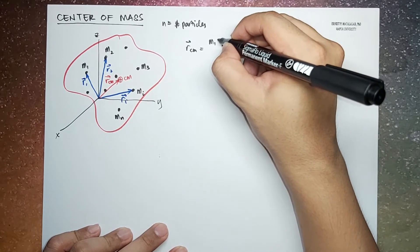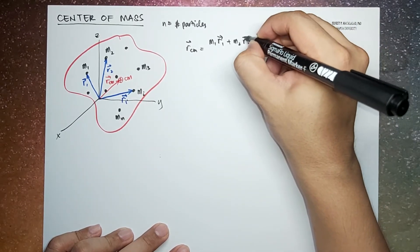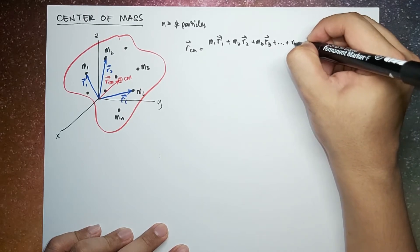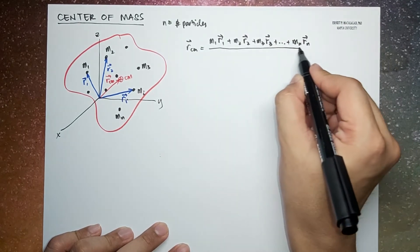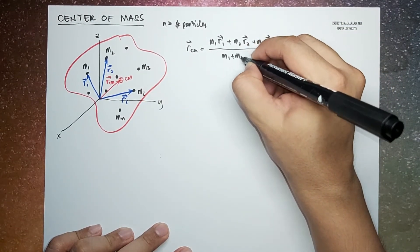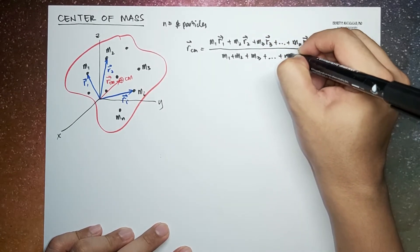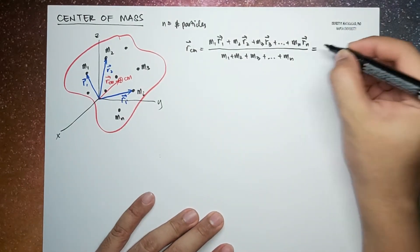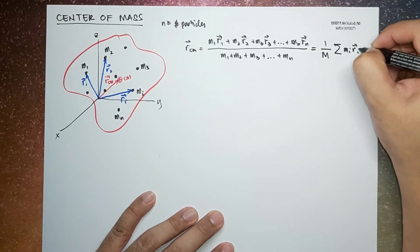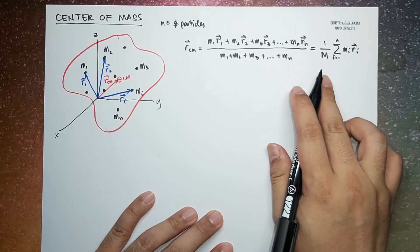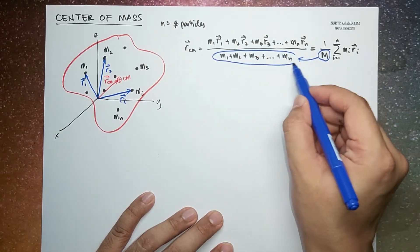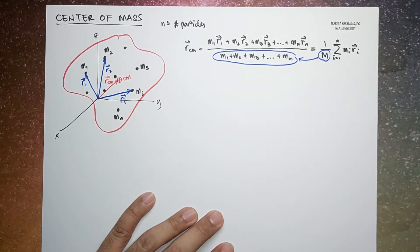R_cm is given by m1·r1 + m2·r2 + m3·r3 + … + mn·rn, all divided by the total mass m1 + m2 + m3 + … + mn. Using summation notation, this equals (1/M) times the sum of m_i·r_i for i = 1 to n, where capital M is the sum of all individual masses of the constituent particles.